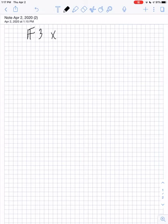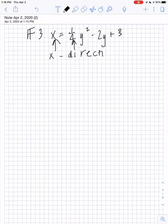Okay, and this is x equals 1 fourth y squared minus 2y plus 3. Oops, let's try that again, plus 3. Okay, so x is the non-squared variable, so this is going to open in the x direction, and a is positive. So this is an x direction, a is greater than 0, so therefore this parabola is going to open to the right.